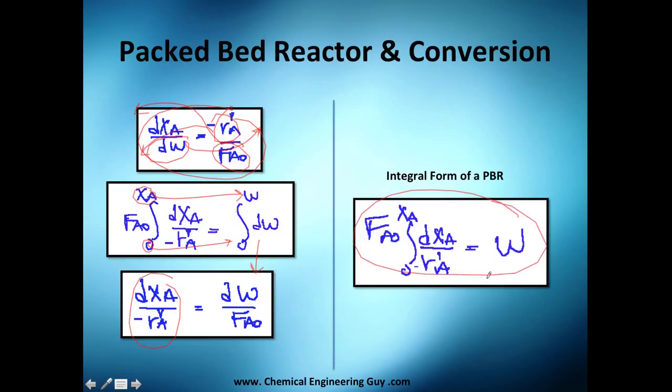I get this: the amount of catalyst that you need to use is given by this function—the flow of A you use at the beginning times the integral of this conversion with respect to rate of reaction. Just to let you know, this minus R_A here is moles of A per unit mass per unit time, so very important to know it's mass.